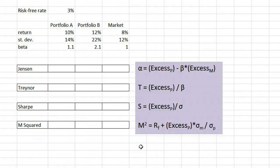This video gives examples of finding four different measures of risk-adjusted return, which are Jensen's alpha, the Treynor measure, the Sharpe ratio, and the M-squared measure.